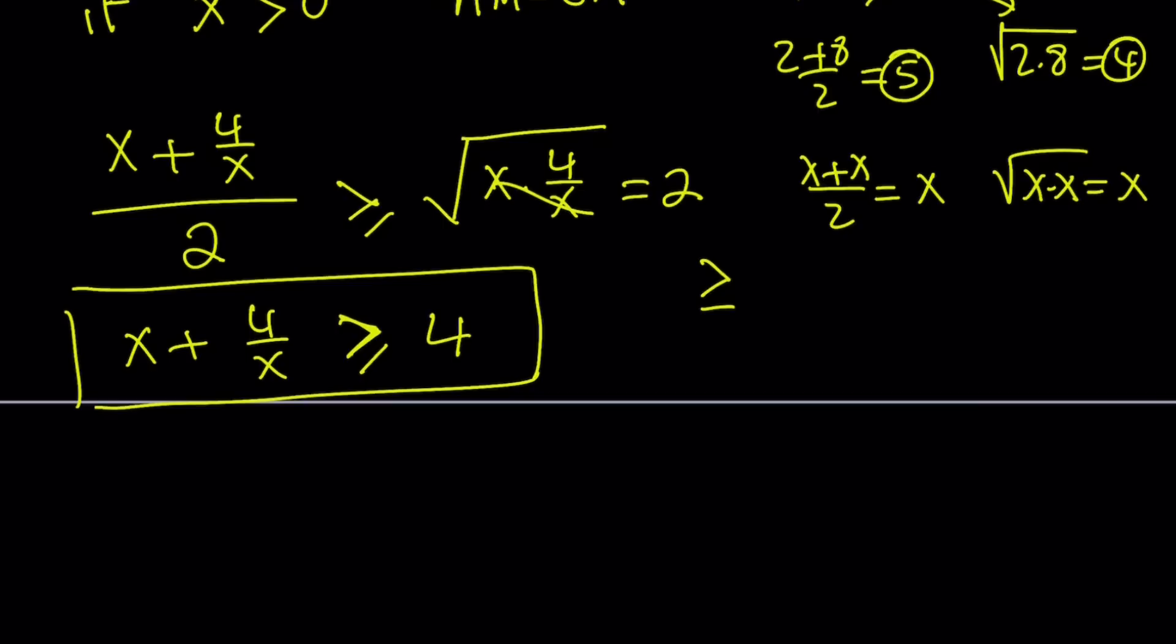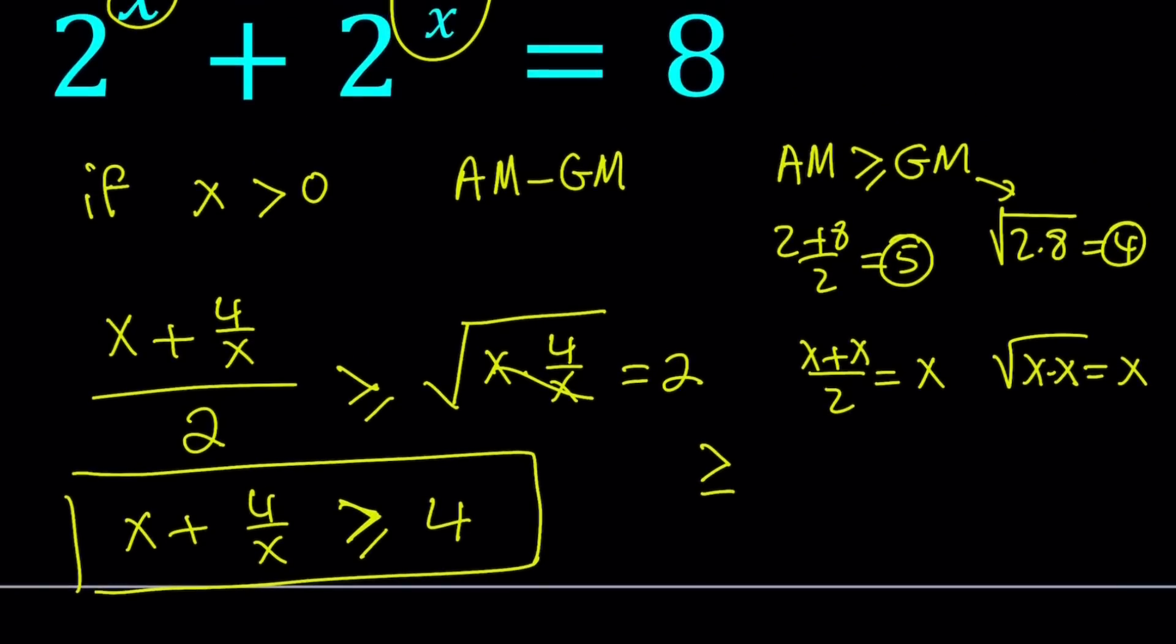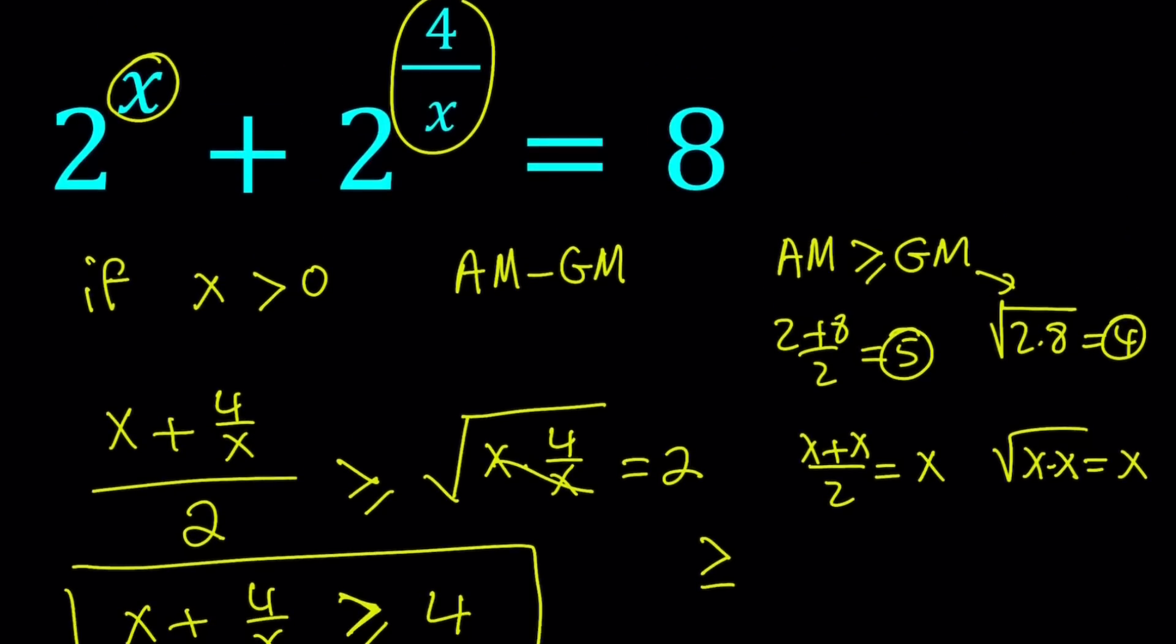So now we got an inequality, a bound, kind of like a lower bound for x positive. That's nice, sort of like a minimum. And we can kind of look for more options.